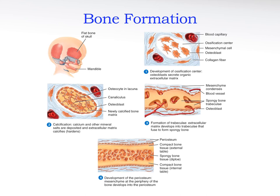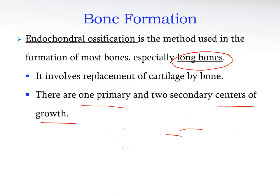Intramembranous ossification is typical of flat bones, and endochondral is typical of long bones. Some irregular bones may have both types. For a typical long bone like the femur, it's endochondral ossification. For a flat bone like the cranial bone, it's intramembranous. Now it's time to cover endochondral ossification in more detail.